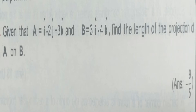You can see problem 2.10 on your screen. The problem is: given that vector a is equal to i minus 2j plus 3k, and vector b is equal to 3i minus 4k, find the length of the projection of a on b.